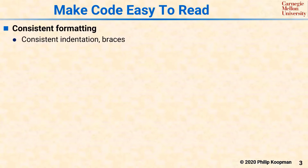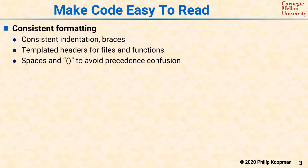A starting point for making your code easy to understand is to make the text itself easy to read. All the code in a codebase should have consistent formatting, including consistent indentation, braces, and headers. Coding guidelines often have rules such as the use of white space, the use of parentheses to avoid operator precedence confusion, and using spaces instead of tabs so the code looks the same when viewed on different text editors.